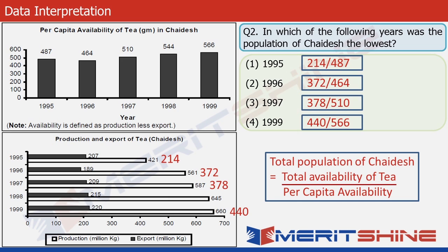We have four ratios and need to find the lowest. For 1995, 214/487: is 214 less than half of 487? Yes, so it's less than 0.5. For 1996, 372/464: 372 is more than half of 464, so greater than 0.5. For 1997, 378/510: again greater than 0.5. For 1999, 440/566: also greater than 0.5. Since only the first ratio is below 0.5, the answer is clearly option 1 — the population was lowest in 1995.